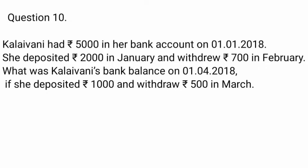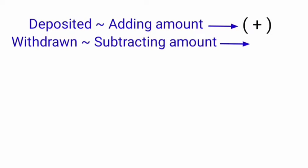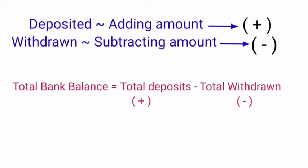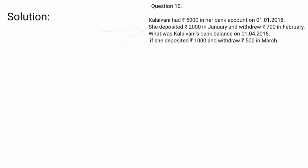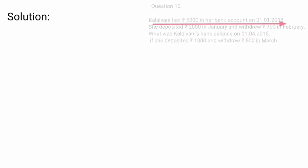Question 10: Kalaivani had Rs. 5000 in her bank account on 1-1-2018. She deposited Rs. 2000 in January and withdrew Rs. 700 in February. What was Kalaivani's bank balance on 1-4-2018 if she deposited Rs. 1000 and withdrew Rs. 500 in March? Here, deposited means adding amount — it refers to plus — and withdrawn means subtracting from the initial amount — it refers to minus.